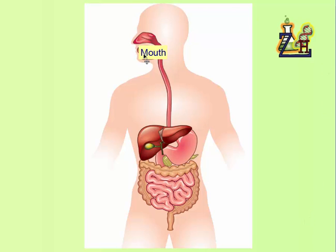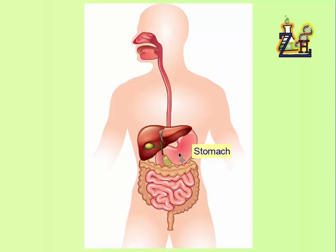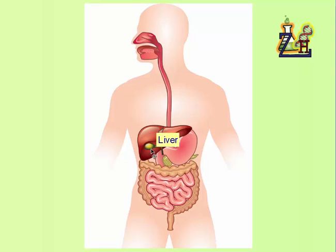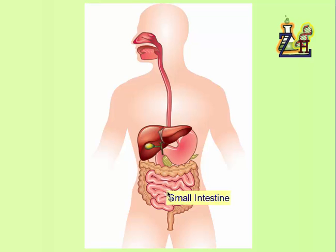First we have the mouth. As we go down, we have a tube which attaches the mouth to the stomach. This is the stomach. Next to the stomach is the liver, and under the liver is the gallbladder. The liver secretes bile which helps the lipase. There is a tube between the liver and the gallbladder — the liver sends bile to the gallbladder where it is stored. Another tube sends the bile when needed to the small intestine.